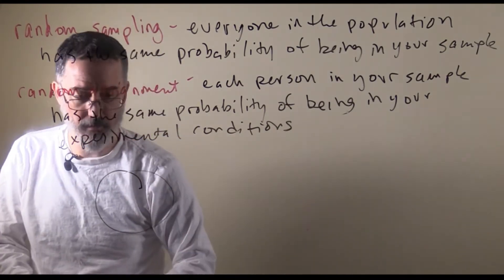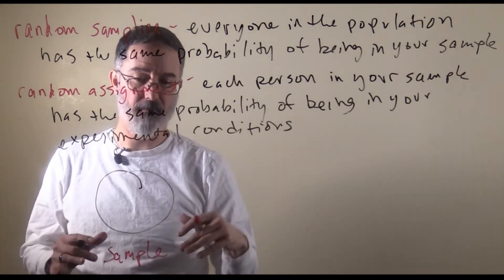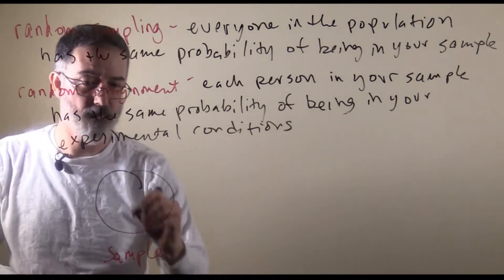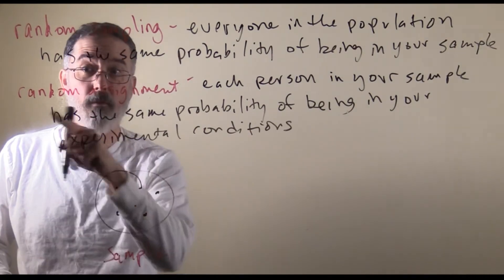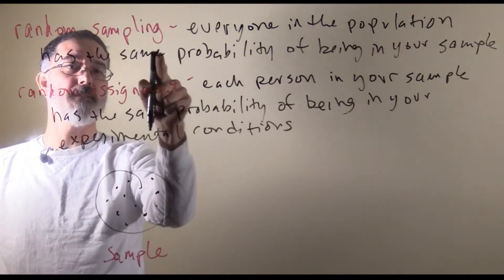Here, you start off with a sample. You have already done your sampling from the population, and you have a sample of individuals already, before random assignment happens. So, theoretically, you do random sampling to get your sample.